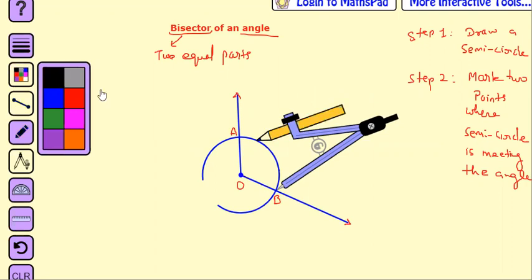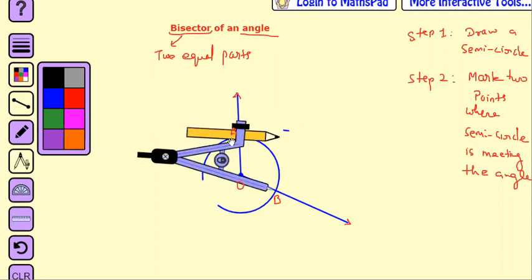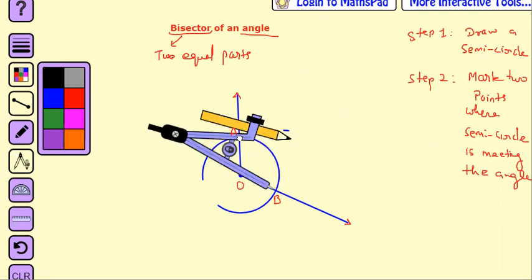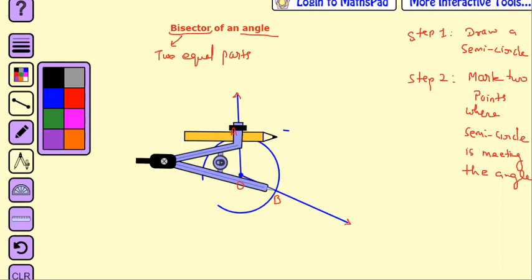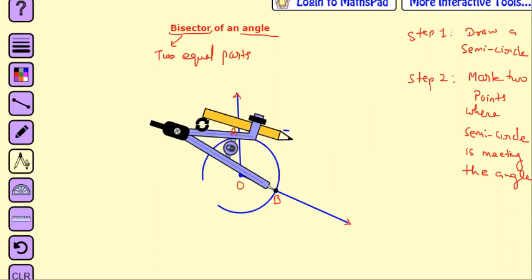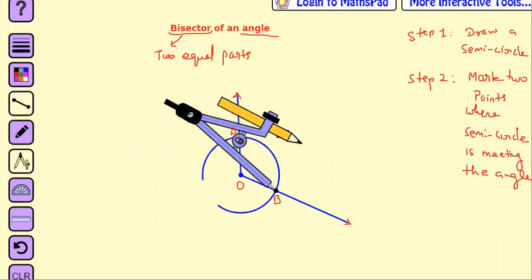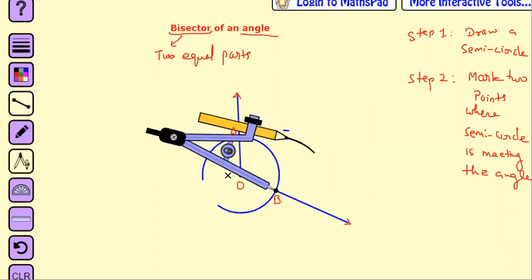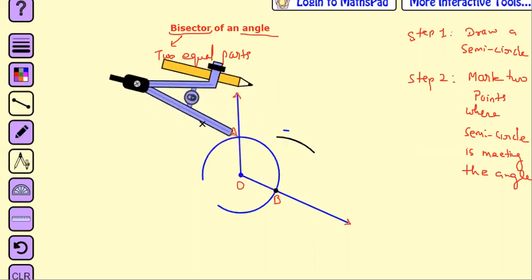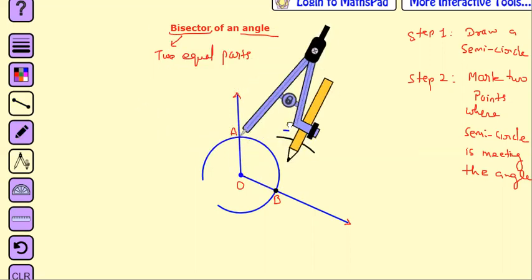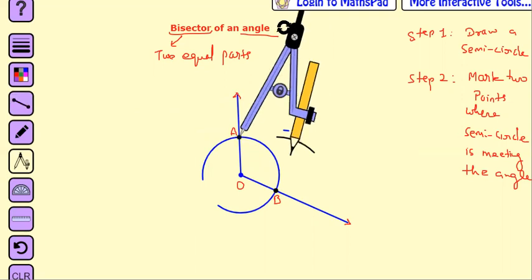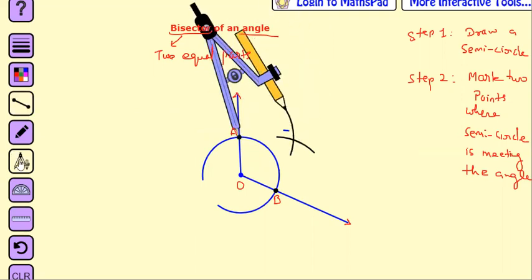Yes sir. Let me just change the color of the pencil. What is the color? Okay, now without changing the radius, stand on point A also. That's it, that is the point from where I have to draw a line.